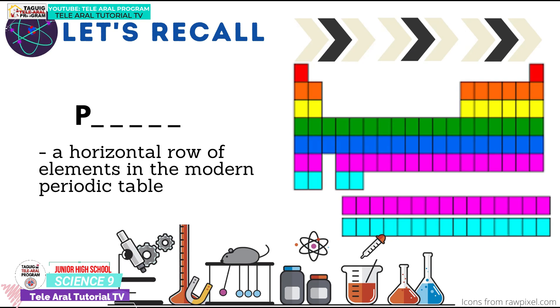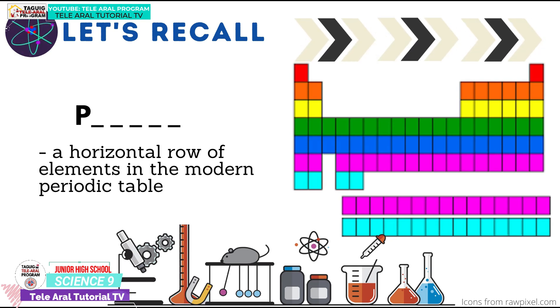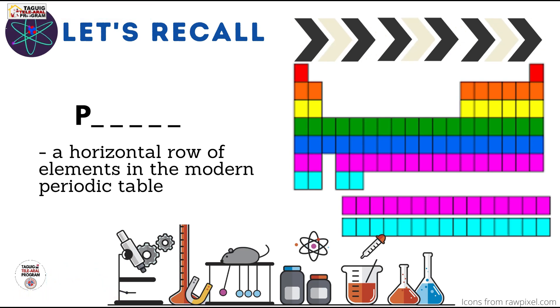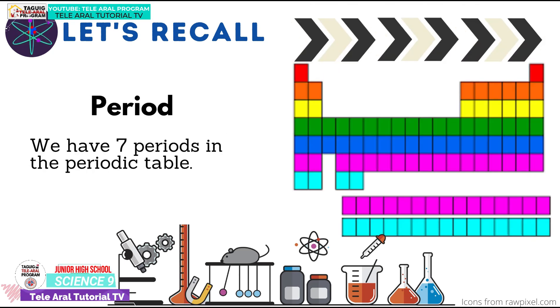Now, what do you call the horizontal row of elements in the modern periodic table? Great! That is the period. When you look at the periodic table, it has seven periods.